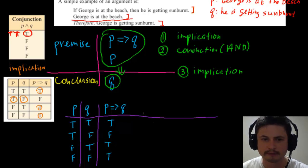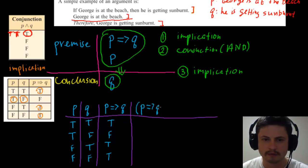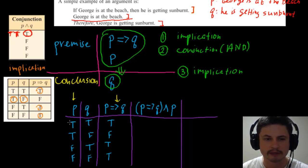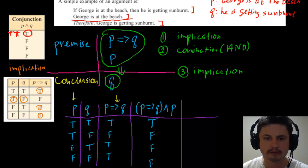Next column is the conjunction of (if P then Q) AND P. We're looking at two columns: the implication column and the P column. For this to be true, both columns have to be true. Going through: first row is true and true — so true. Second row is false and true — false. Third row is true and false — false. Fourth row is true and false — false. So only the first row is true.